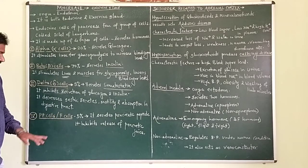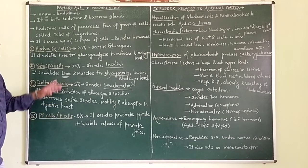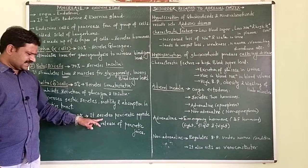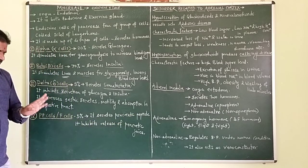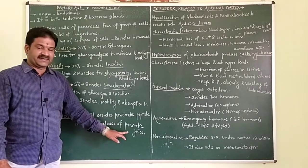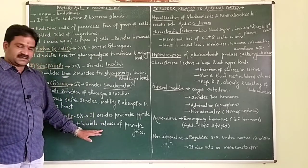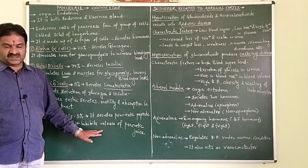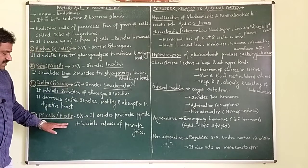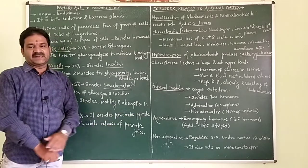PP cells, also called F cells, are the fourth type of cell in the Islets of Langerhans, constituting 5%. They secrete pancreatic peptide, which inhibits the release of pancreatic juices.